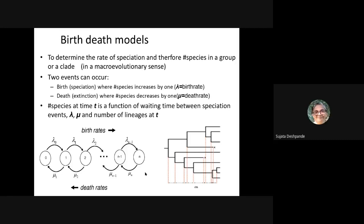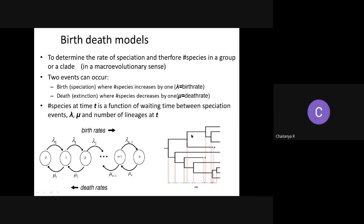A state diagram shows how the birth-death model works: you start with zero, then at a certain speciation rate go to one species, then two, and so on up to n species. At each step the speciation rate changes because it depends on the number of lineages present at that time. The same holds for the extinction rate mu.